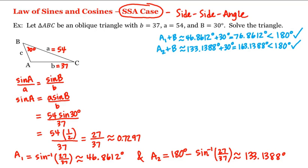Now had this turned out to be greater than 180 degrees, then there would only be one solution. And also sometimes in these cases we get no solution — if the sine value had turned out to be greater than 1, then there would be no solution because there is no angle whose sine is larger than 1. But in this case we will have two solutions.